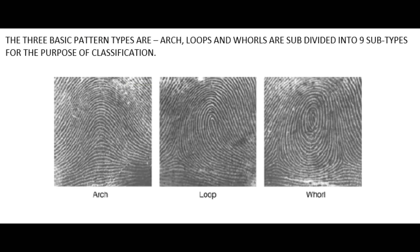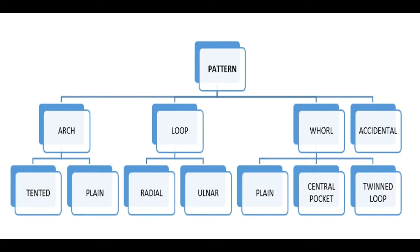Here we will look at fingerprint patterns: arch, loop, and whorl. Arch is subdivided into two types — plain arch and tented arch. Loop pattern is divided into two: radial loop and ulnar loop. Whorl pattern is divided into three: plain whorl, central pocket, and twin loop. There is also a combining whorl pattern and an accidental pattern, which is a mixture of two or three patterns. We use this classification when we identify our fingerprints, and our database can identify it when it comes to comparison.